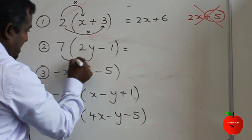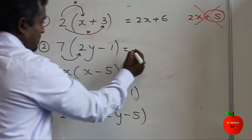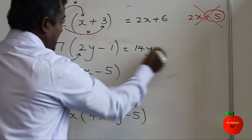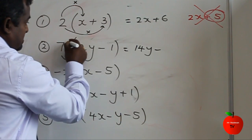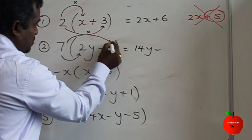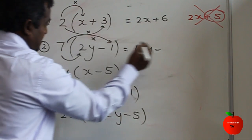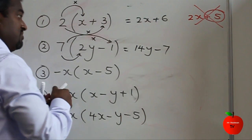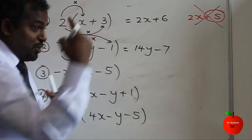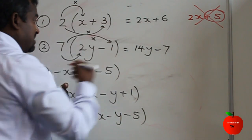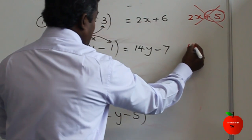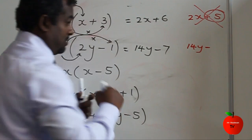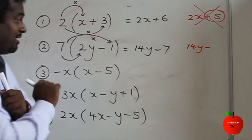Question two: 7 times 2y is 14y, then minus 7 times 1 is 7. Be careful with the minus sign on the second term — make sure you carry it through correctly.